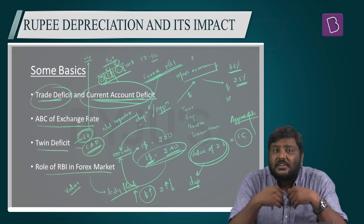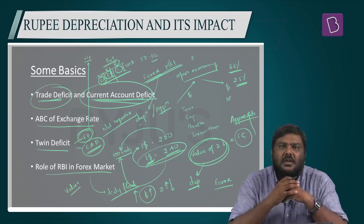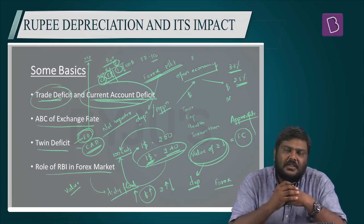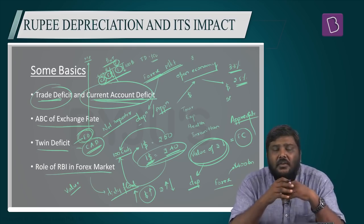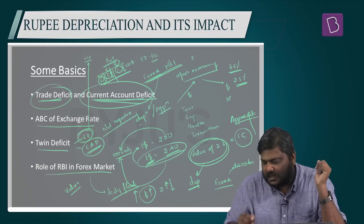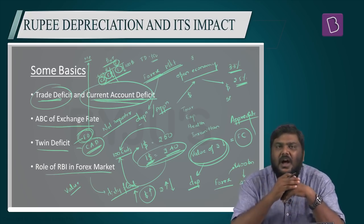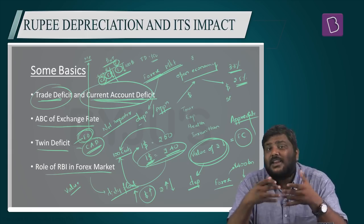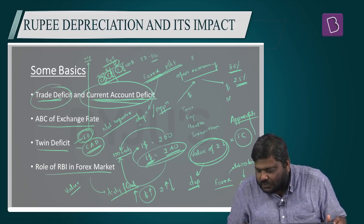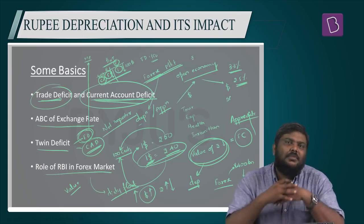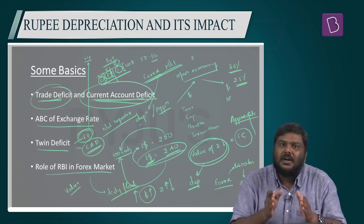There is a limit on how much RBI can control this situation. RBI's interference depends on how much forex reserves are available. India achieved a huge feat when forex reserves crossed more than $400 billion by end of 2017, reaching around $426 billion. But because rupee has continuously depreciated this year, RBI has been forced to intervene and sell off dollars. As a result, forex reserves have come down from $426 billion to just over $400 billion. The more rupee depreciates, the lower the forex reserves become, limiting how much RBI can control the depreciation.